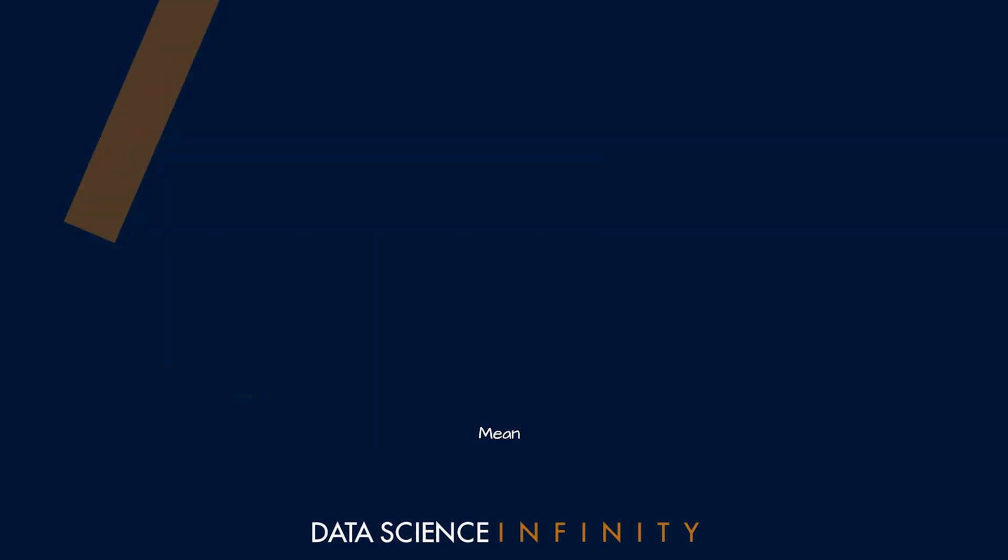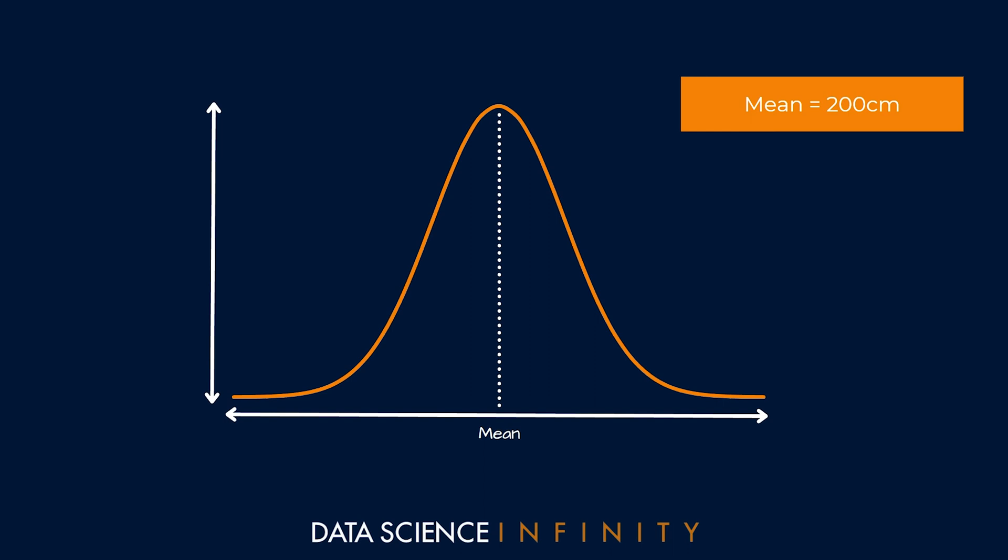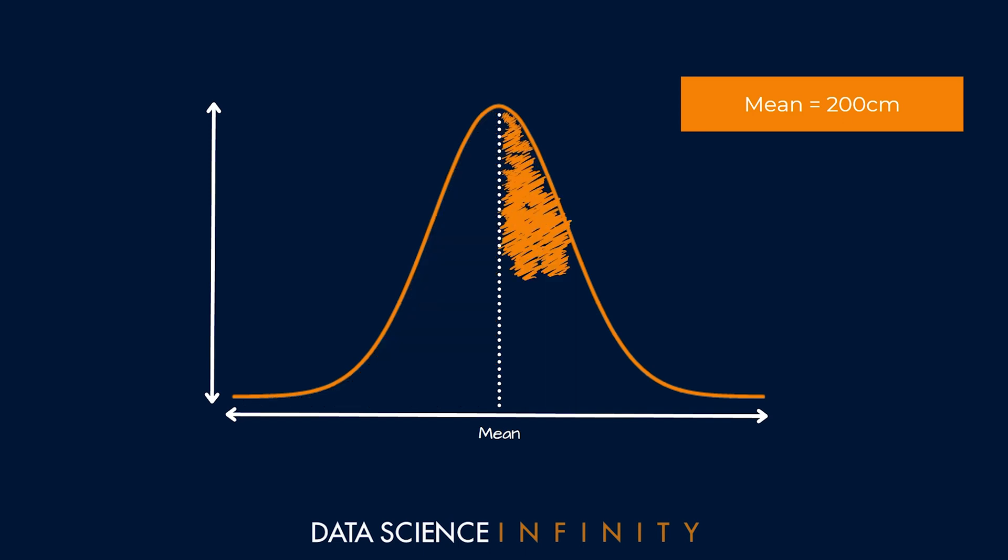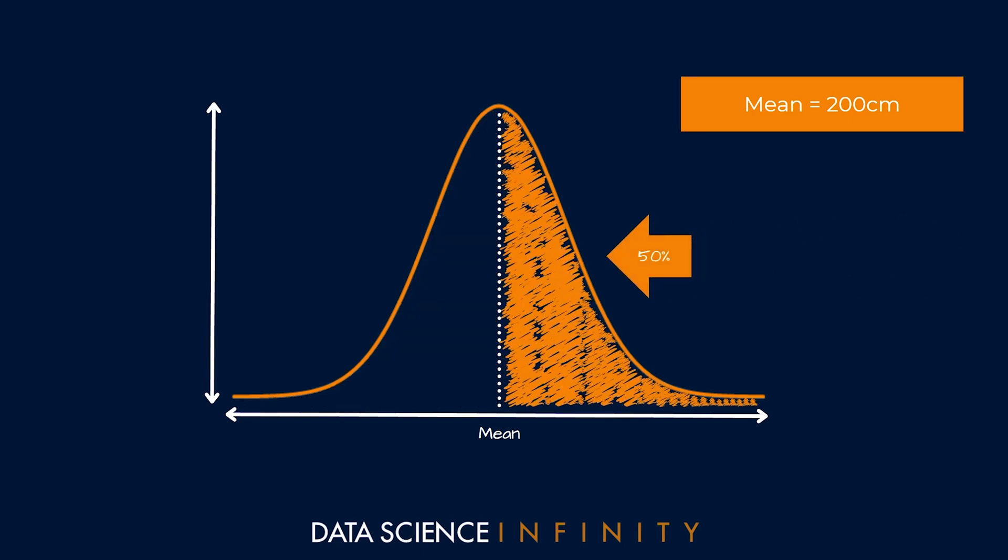let's go and apply it to our NBA distribution, where we said that the mean height was 200 centimeters. Without knowing anything else, if we know this is a normal distribution, because normal distributions are symmetrical, we can say that 50% of players will be shorter than the mean and 50% will be taller. But with a normal distribution, we can take this understanding of player heights much further.